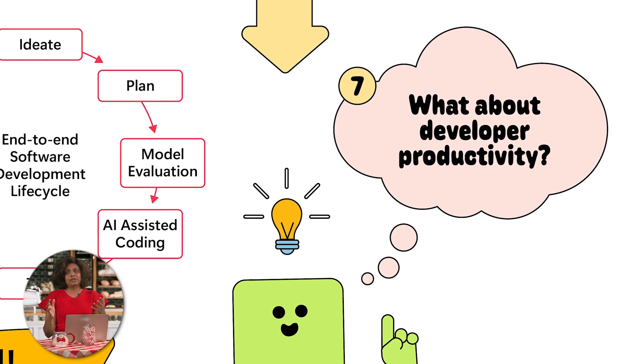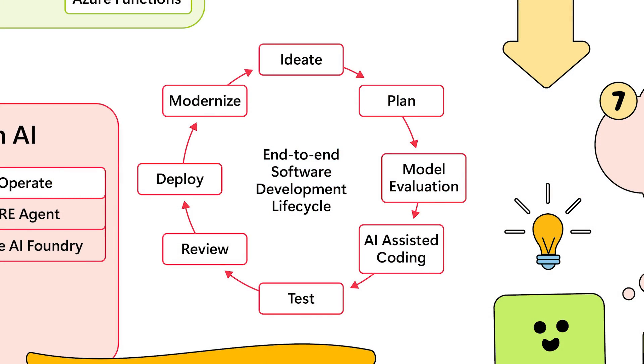The last thing is developer productivity — I think this is extremely important and often forgotten when thinking about applications. Your developers are also going to need to change how they work when building AI applications. The software development lifecycle starts from ideation to planning, then model evaluation — an extra step compared to traditional SDLC — and AI-assisted coding, which are the new elements being introduced into the software development lifecycle.